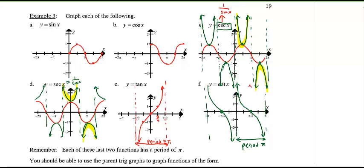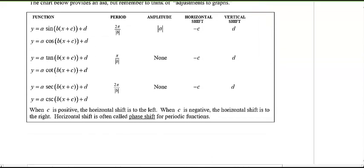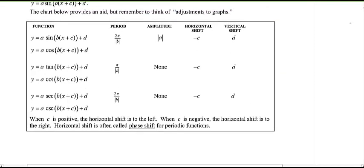Just like shifting parent graphs before, the same transformations apply to all these trig graphs. The period is affected by the factor b — and note that for tangent and cotangent, the base period is π. We don't discuss amplitude for tangent and cotangent, but we do for sine and cosine. The usual shifts — left, right, up, down, reflections — all apply.